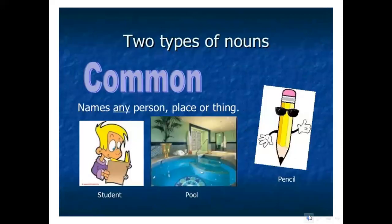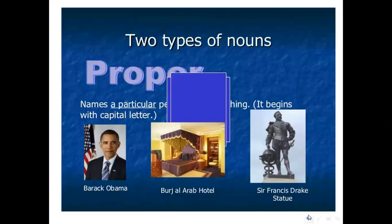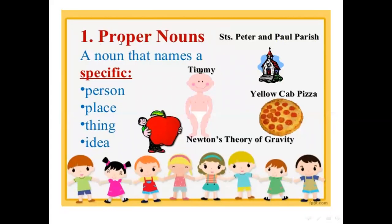There are two types of nouns. Common nouns name any non-specific person, place, or thing — like student, pool, pencil. Common nouns are the non-specific name of a person, place, thing, or idea. The second type is proper nouns — names of a particular person, place, thing, or idea — and they always begin with a capital letter. A proper noun names a specific person, place, thing, or idea.